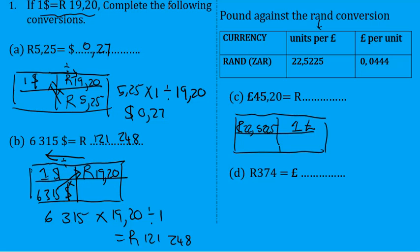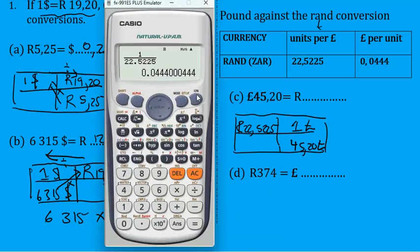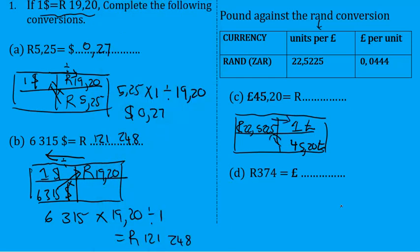So if we do the criss-cross method again, we multiply and then divide. Multiply across and then divide sideways. We will get 45.25 times 22.5225 divided by 1.